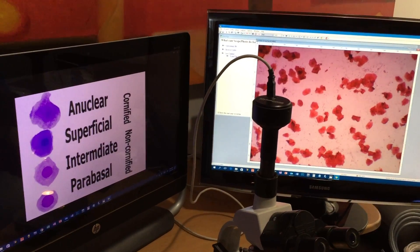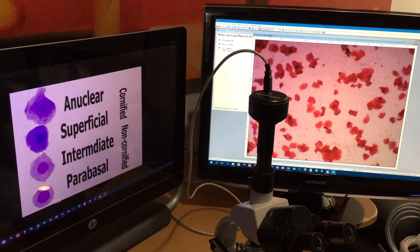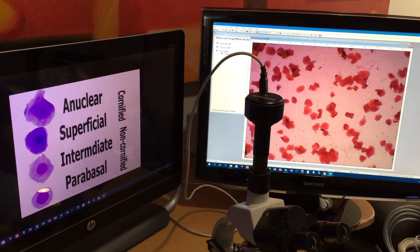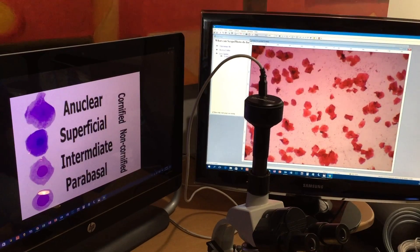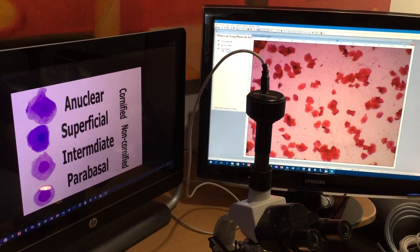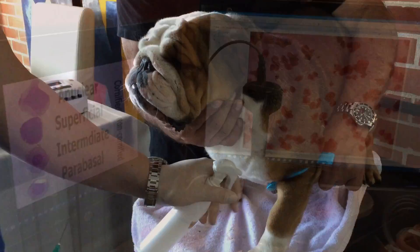According to progesterone levels yesterday she was at 2.47, so she's not ready yet. We're looking for 5 nanograms, which is ovulation, and after that we'll continue. Alright, let's go do the progesterone. Okay, so we're gonna collect the blood for the progesterone. You want to clean the area really well.